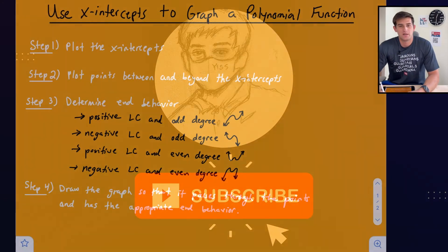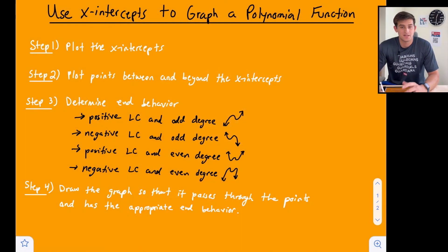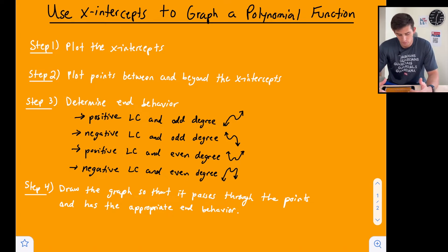In this video I want to talk about how we can use x-intercepts to graph a polynomial function. It's essentially a four-step process and we'll break those down on the screen.